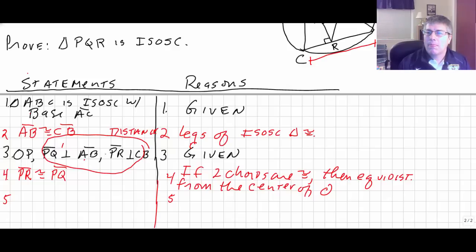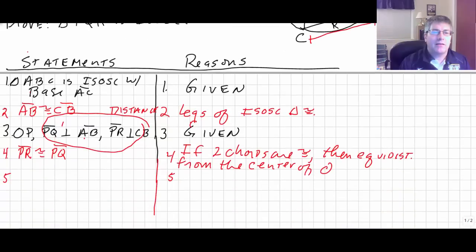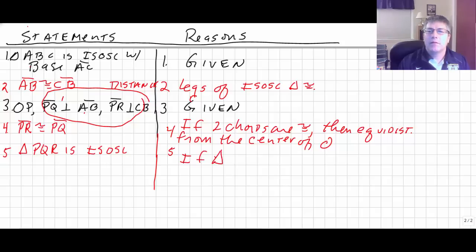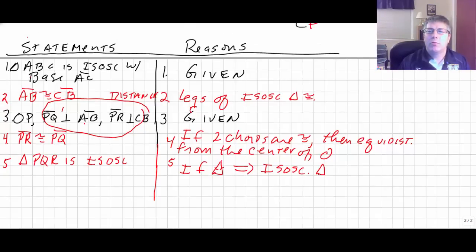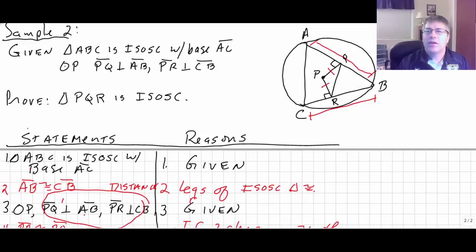Given what we have, we now know that segment PR is congruent to segment PQ, and our reason is: if two chords are congruent, then they are equidistant from the center of the circle. And if we've proven PR is congruent to PQ, doesn't that make the inner triangle isosceles — because we've got two congruent legs? So triangle PQR is isosceles, using the definition that congruent legs give an isosceles triangle.